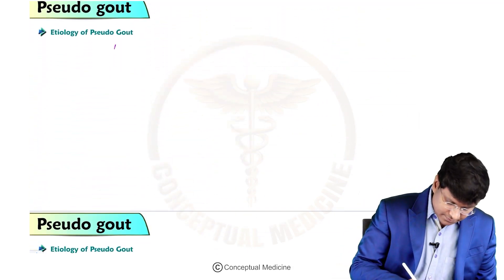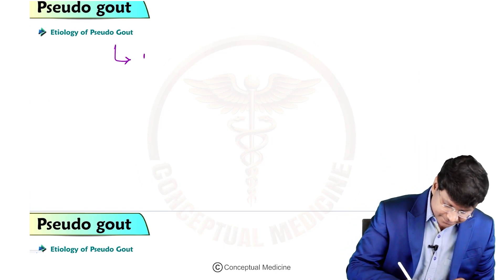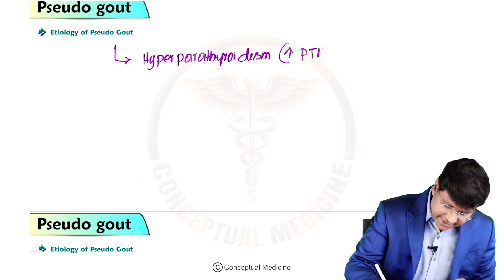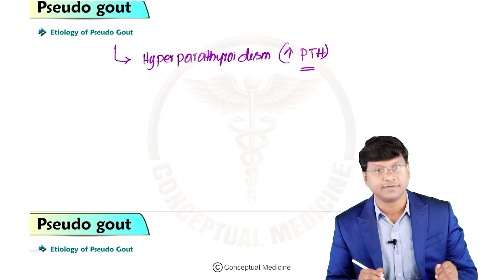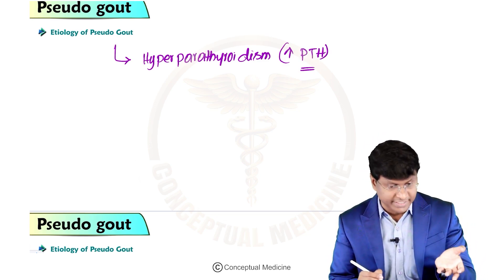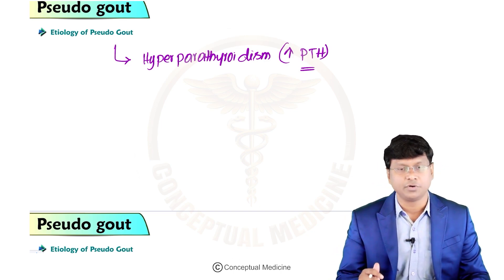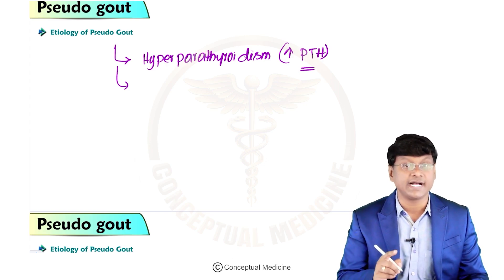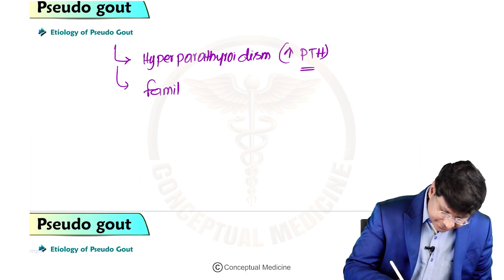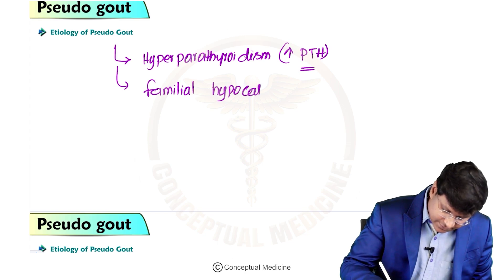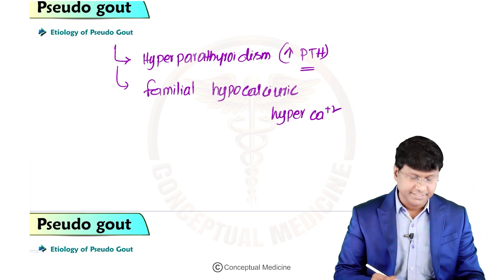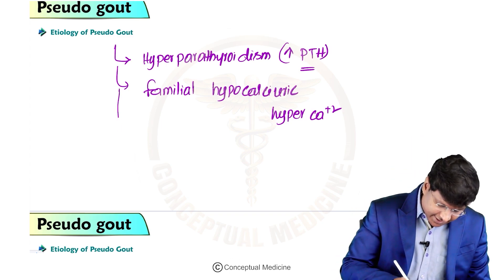The etiology for the development of pseudogout includes, number one, hyperparathyroidism. In patients with hyperparathyroidism, there are increased parathormone levels, which cause calcium reabsorption from bone and increased calcium in the serum, which can then get deposited as calcium pyrophosphate. The second etiology is familial hypocalciuric hypercalcemia.